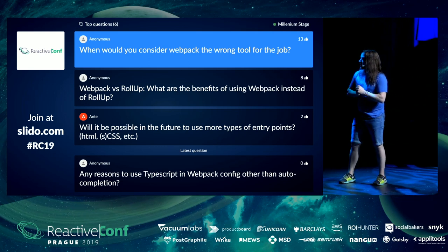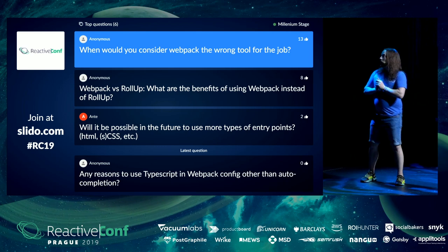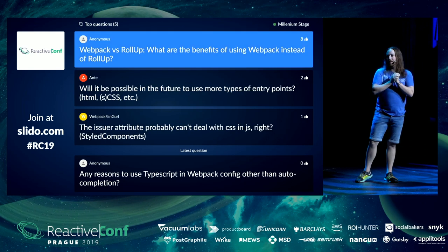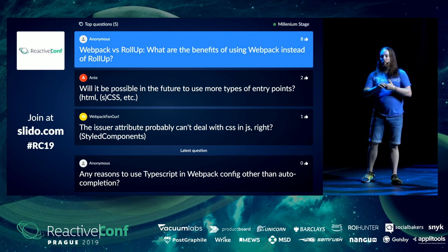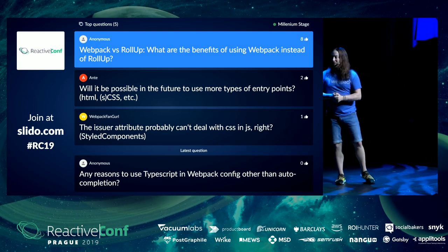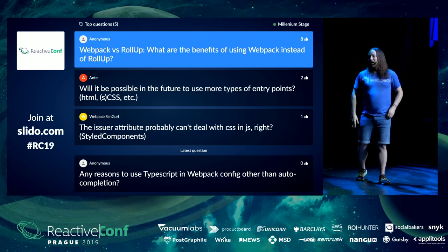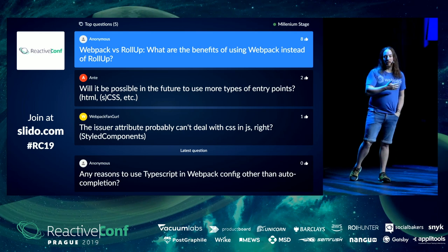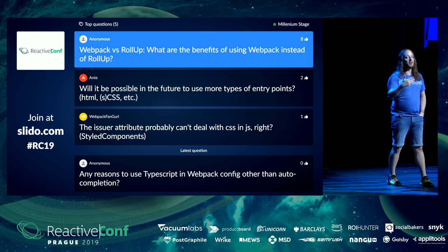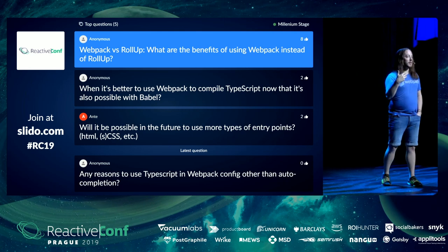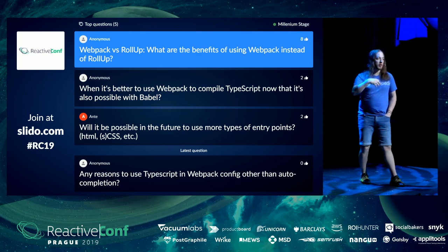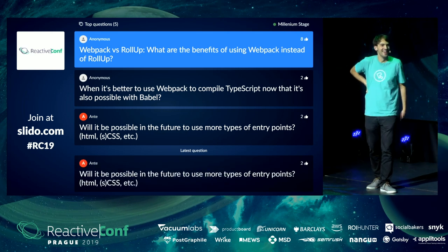Webpack versus Rollup — what are the benefits of using Webpack instead of Rollup? Webpack is more aligned to the specification: any type of code that the module spec supports, Webpack supports. Rollup cuts some corners and may produce output that's around 2% smaller. The main benefit of Webpack is the ecosystem. You should almost always use it when writing a web application. There are huge benefits to using Rollup to bundle libraries — we don't recommend packaging a library using Webpack, only bundling the application that consumes the library. But this will get way better with Webpack 5, so try the beta.